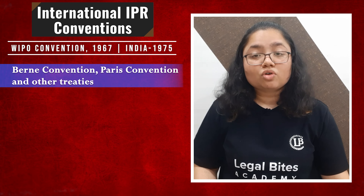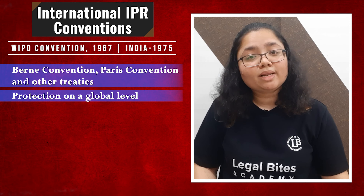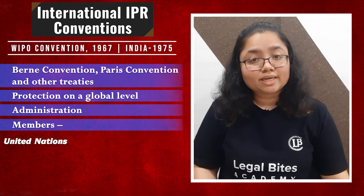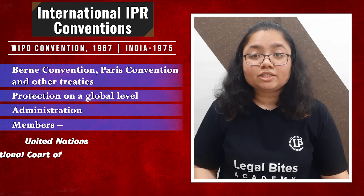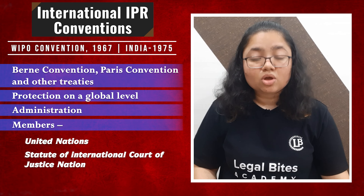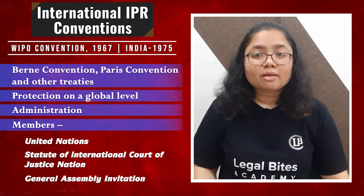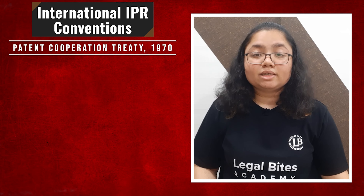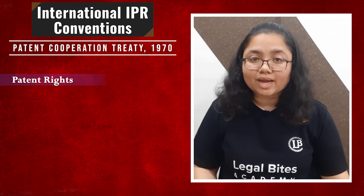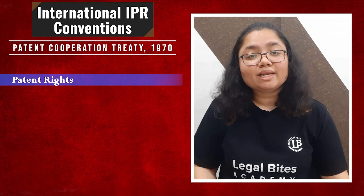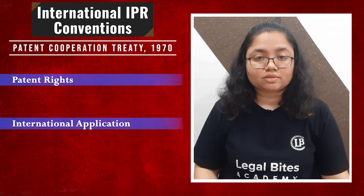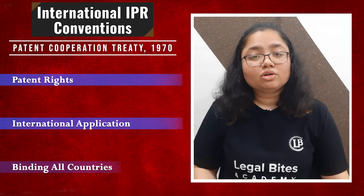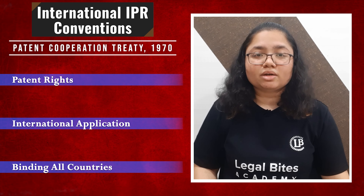The main purpose of WIPO was to offer protection to intellectual property on a global level and administration of the treaties. All nations who are members of the United Nations, or who are parties signing the statute of the International Court of Justice, or who are invited by the WIPO General Assembly, become party to the WIPO Convention. The Patent Cooperation Treaty was passed in the year 1970 to get protection for patent rights in all contracting nations by filing an international application for patents. All countries party to this treaty become bound by the date of filing the patent for the first time in the contracting nation.